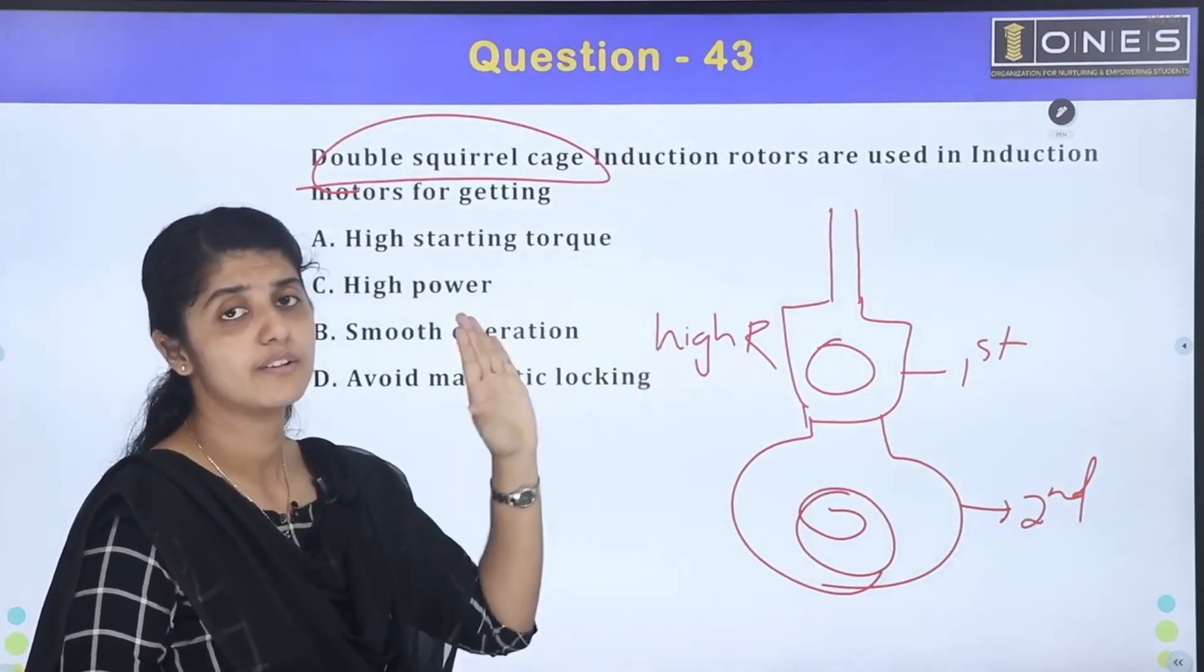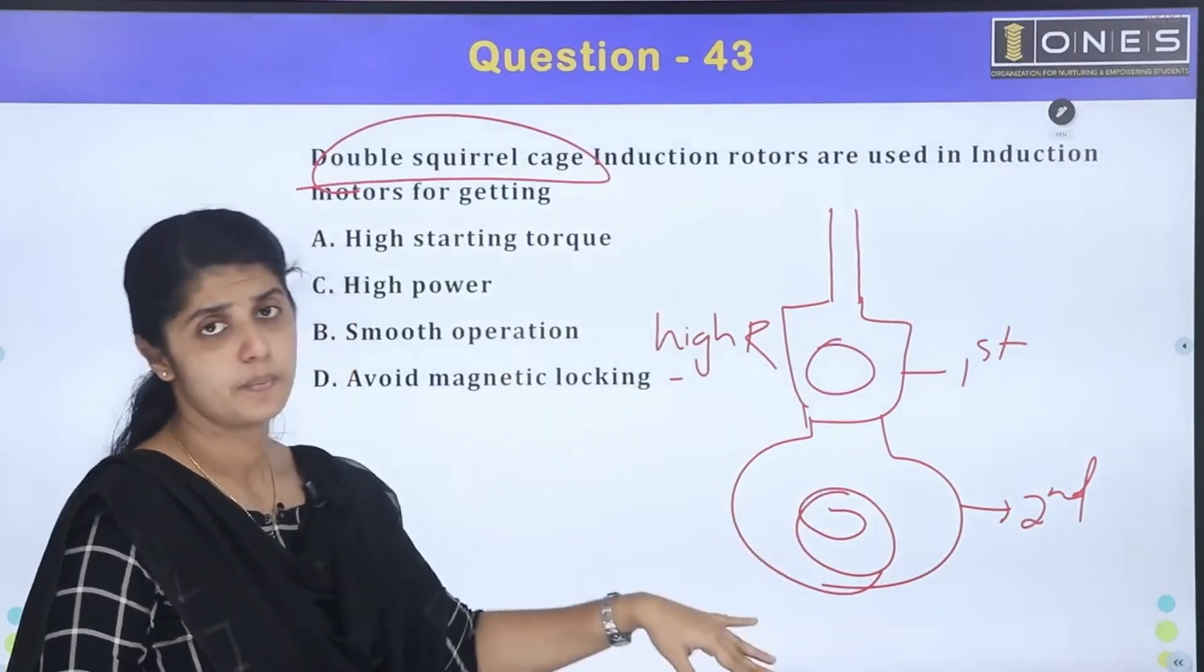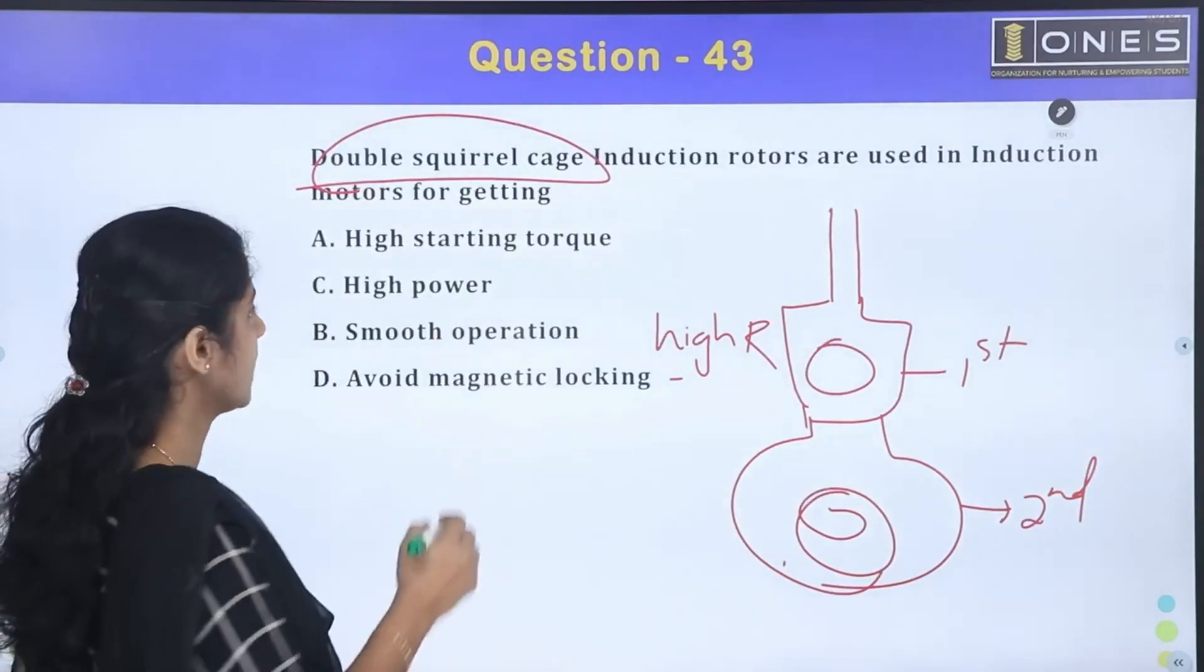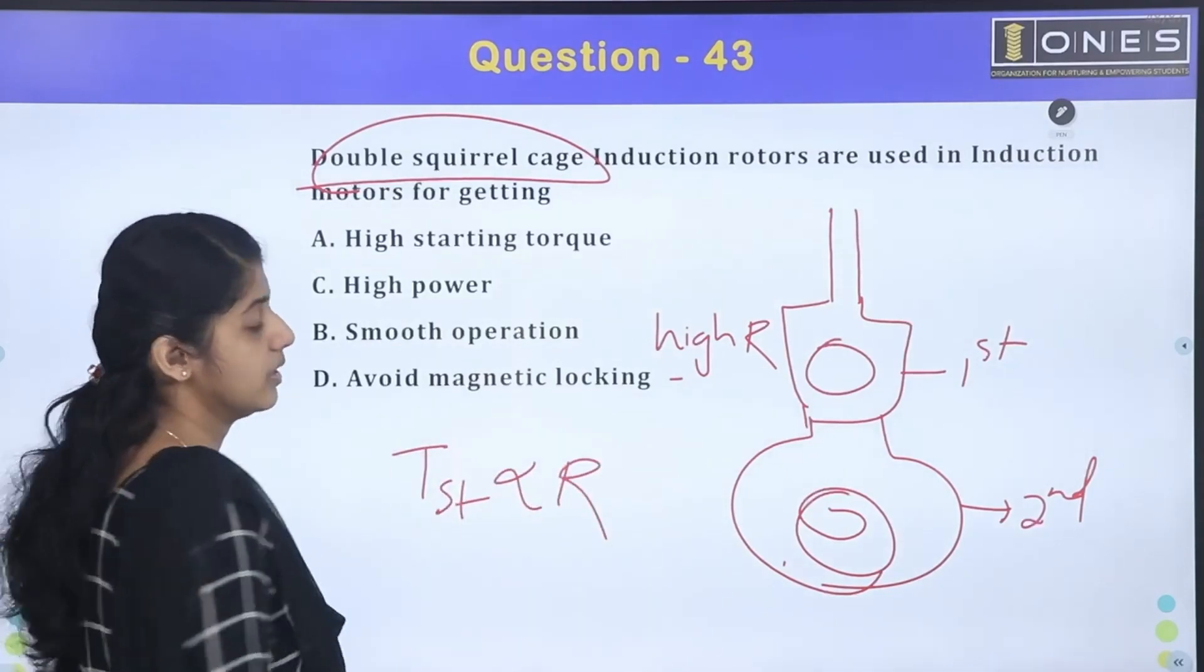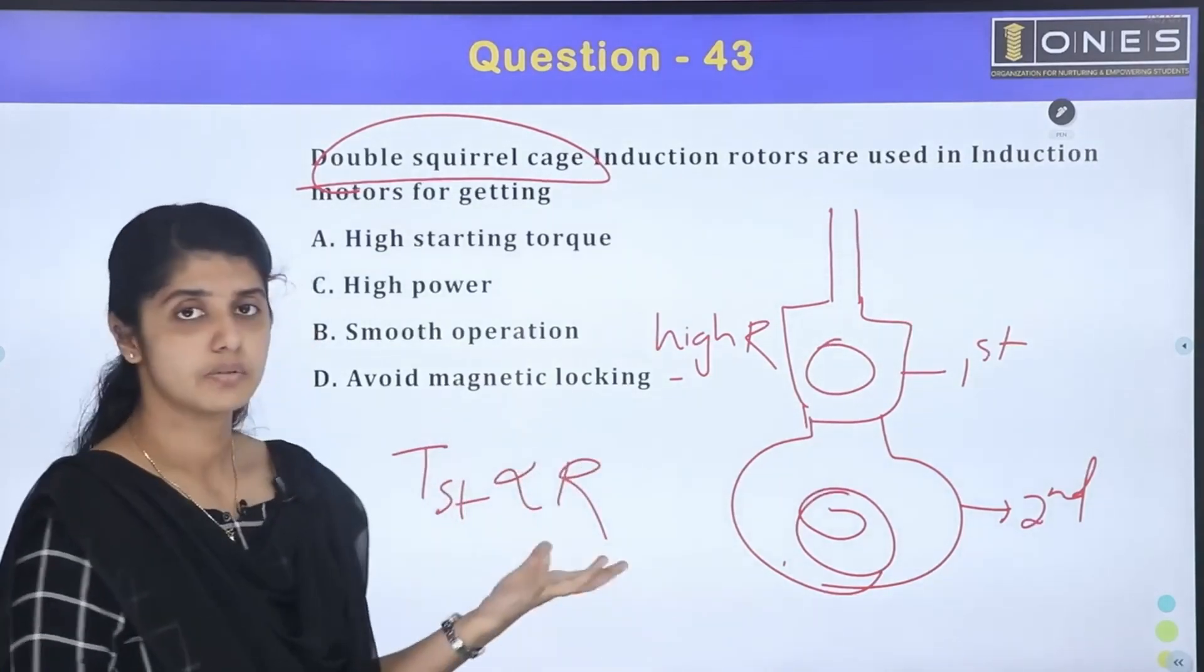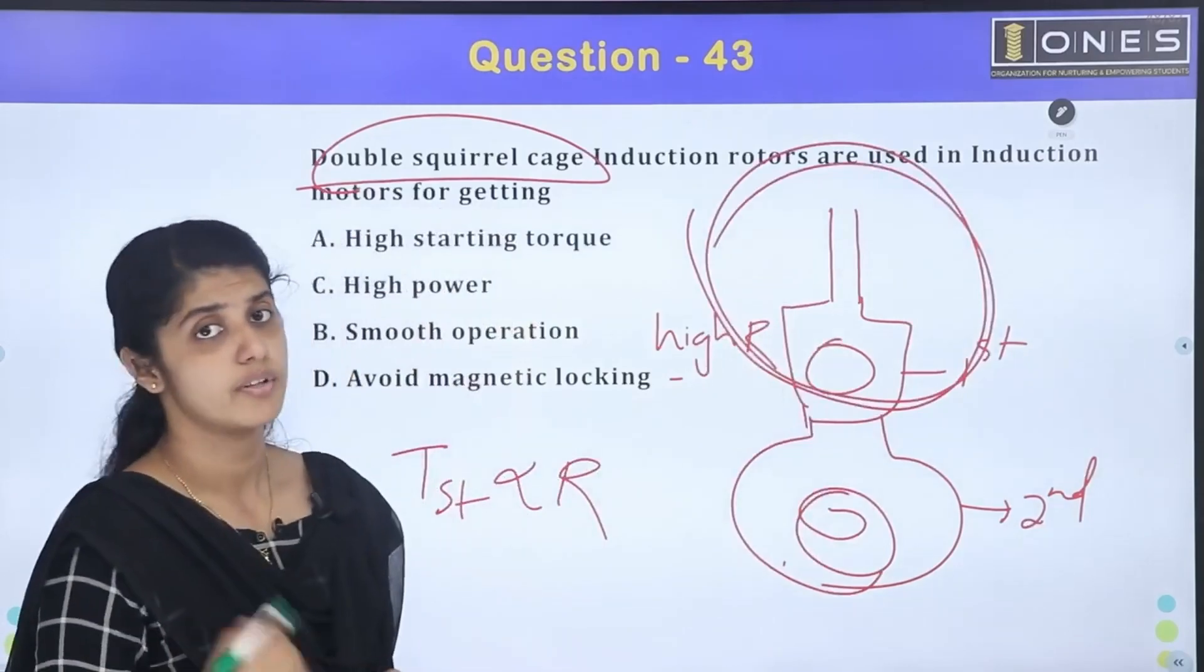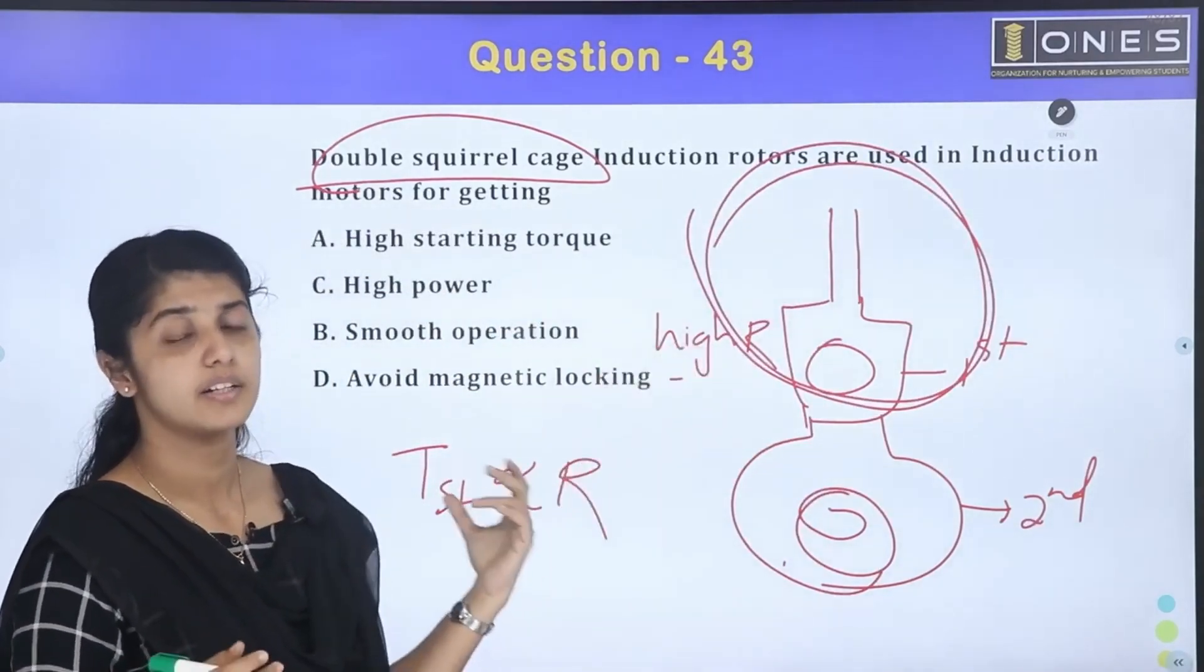This is the X value of the leakage reactance value. This is the opposite: high leakage reactance, low resistance. What do you know about this? Starting torque is proportional to resistance. If you add resistance, we add the starting torque. If you add resistance, we add the starting torque.